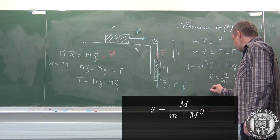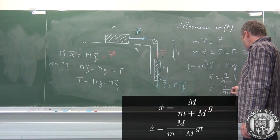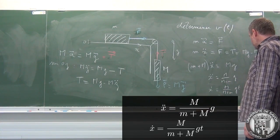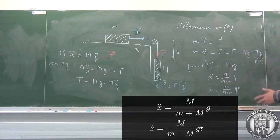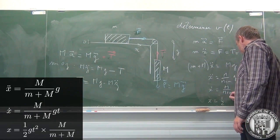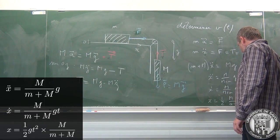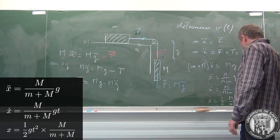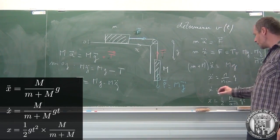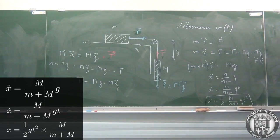Donc le terme d'inertie ici qui figure devant l'accélération, c'est la somme des deux masses, M + m. L'accélération ẍ = (M/(M+m))g. Donc la vitesse est donnée par ẋ = (M/(M+m))gt. La constante est nulle parce qu'on part sans vitesse initiale, et on intègre encore une fois pour trouver x = (1/2)(M/(M+m))gt².